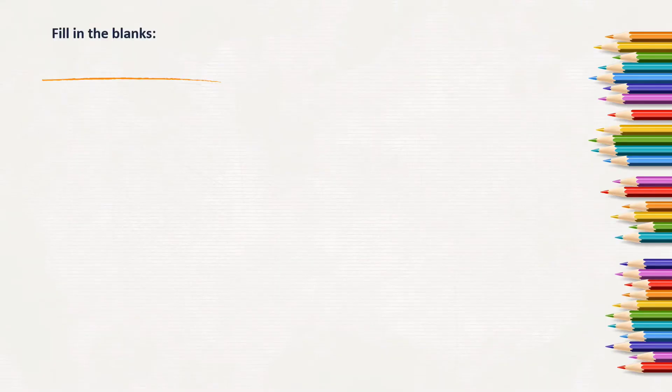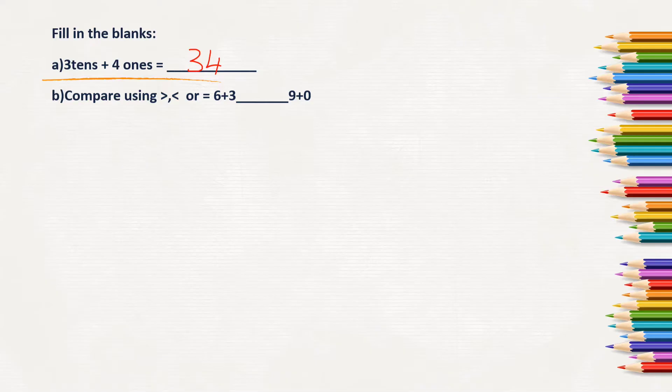First, fill in the blanks. First question: 3 tens plus 4 ones is equal to 34. Next question: compare using greater, lesser or equals. 6 plus 3 and 9 plus 0 we have to compare. 6 plus 3 is 9, also 9 plus 0 is 9, so it is equals. Next, the shape has 3 sides and 3 corners. Which shape will have 3 sides and 3 corners? Yes, triangle.